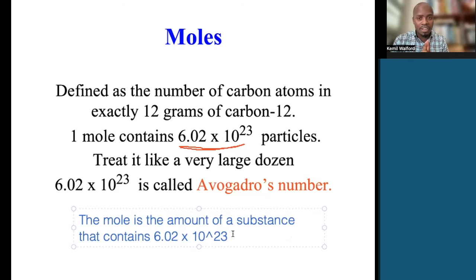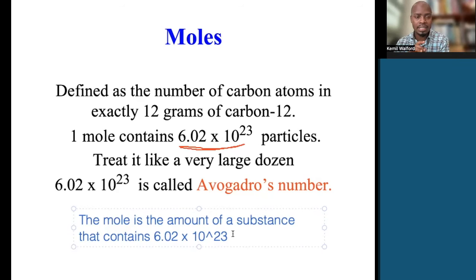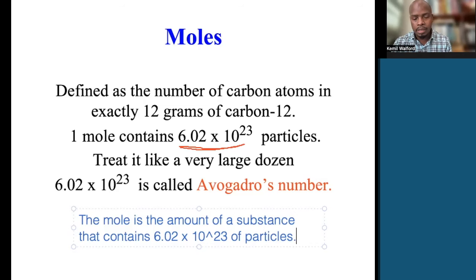So when you have one mole of a substance, that's the number of individual entities contained in it. Treat it like a big dozen. One mole of a substance is the amount of a substance that contains the Avogadro's number of particles — one mark for having that definition.